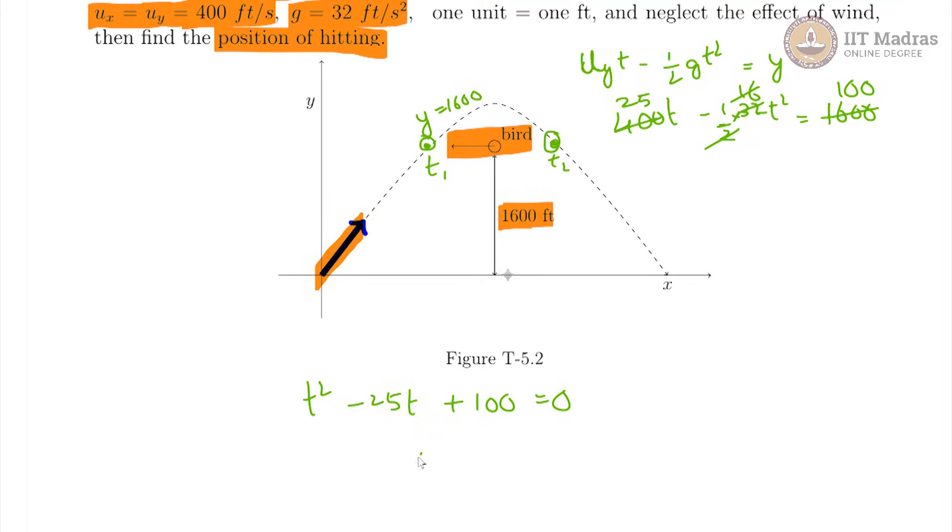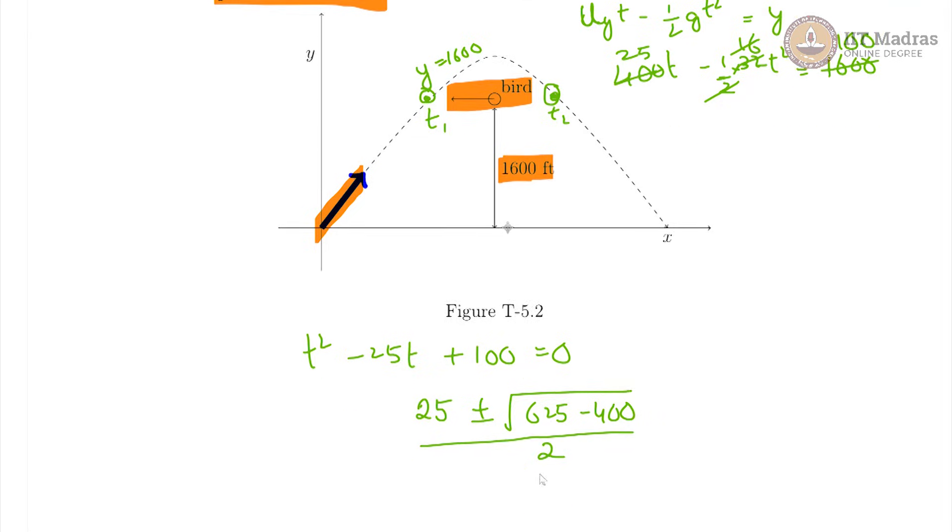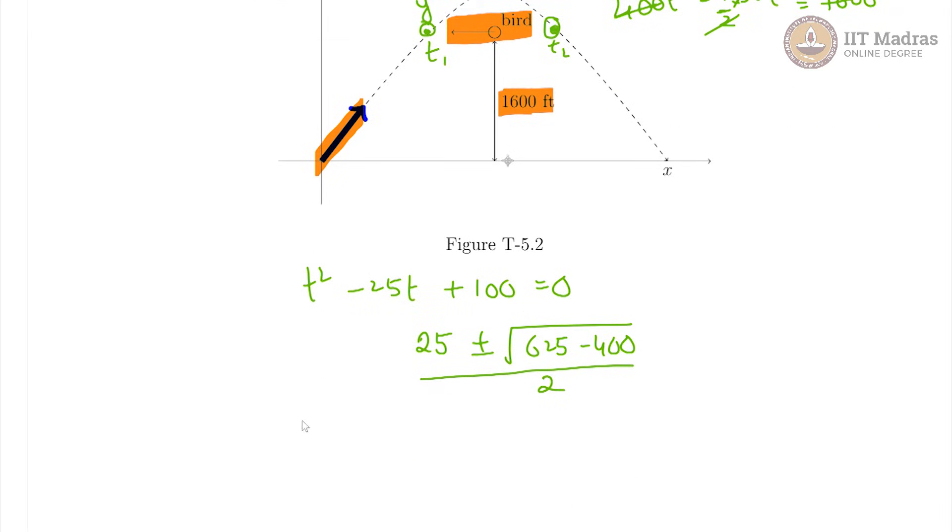So, your two roots are using the formula minus b plus or minus root of b squared minus 4ac by 2a. Here, you will get it as 25 plus or minus root of 625 minus 400 by 2. That gives us 25 plus or minus root of 225 by 2.